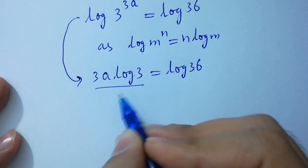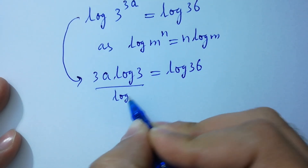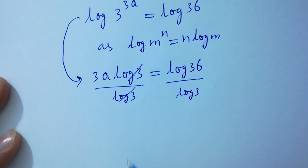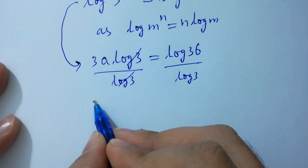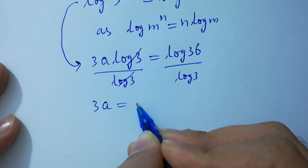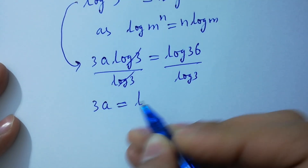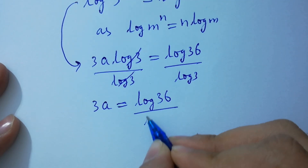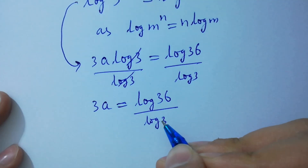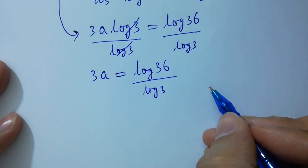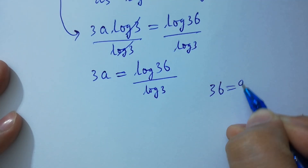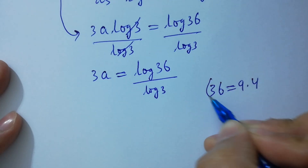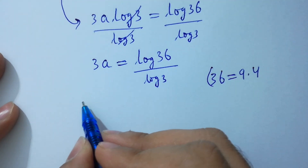Divide by log 3 on both sides. Log 3 and log 3 cancel. So 3a equals log 36 over log 3.